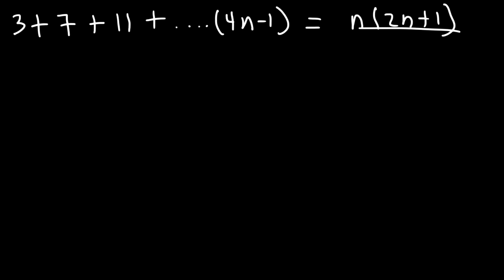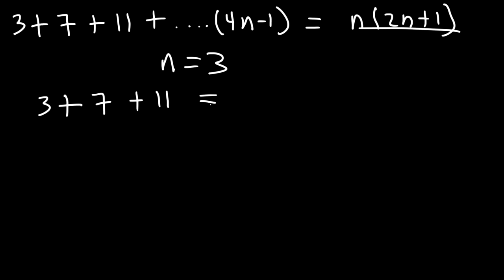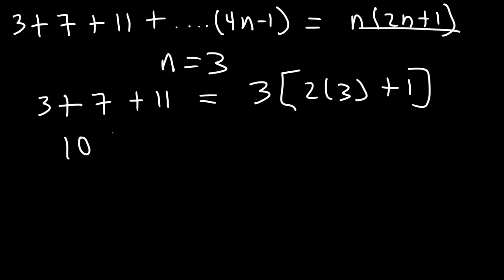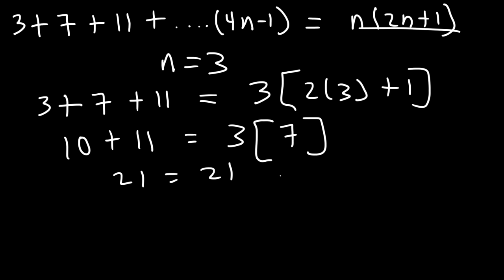Now, is it true for n equals 3? This time we need to add the first three terms: 3 plus 7 plus 11. And on the right side, let's replace n with 3, so it's going to be 3 times 2 times 3 plus 1. Now 3 plus 7 is 10. 2 times 3 is 6, plus 1 is 7. 10 plus 11 is 21. 3 times 7 is 21. So it's true for n equals 3.